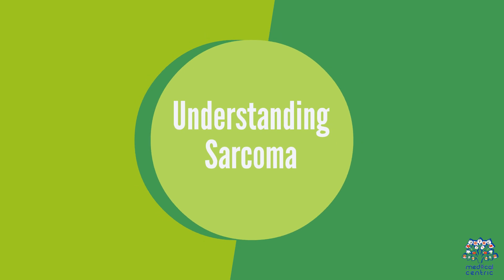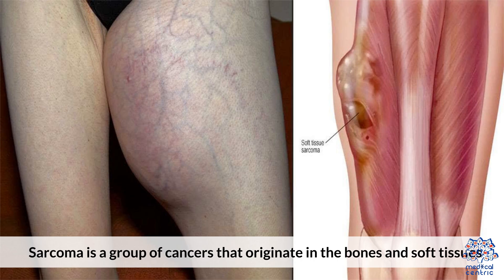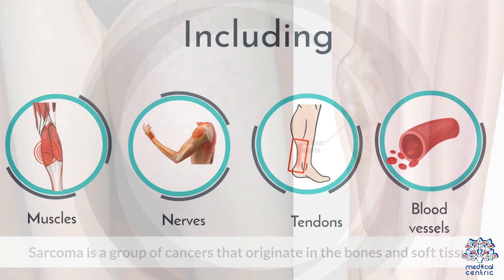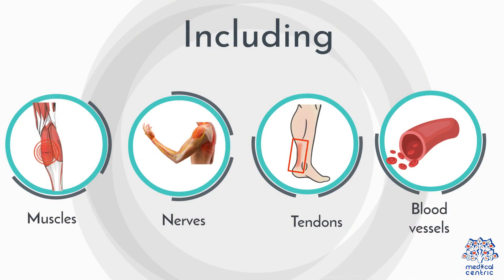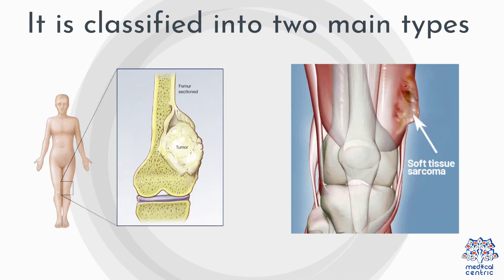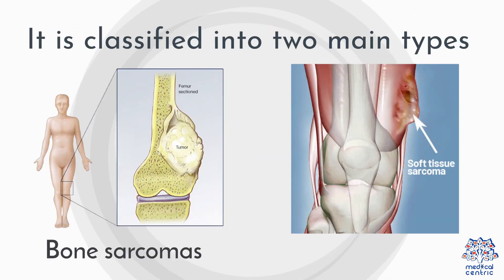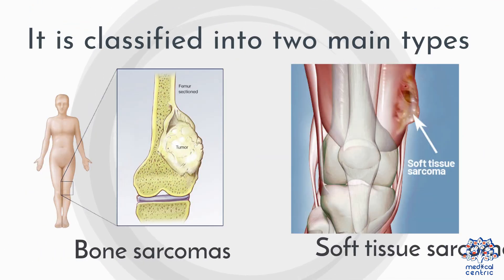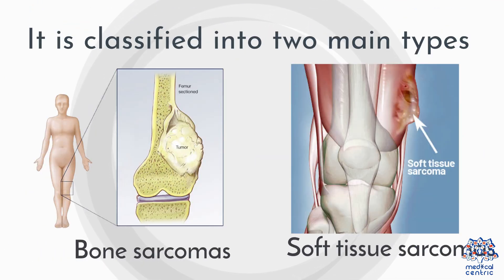Understanding Sarcoma. Sarcoma is a group of cancers that originate in the bones and soft tissues, including muscles, nerves, tendons, and blood vessels. It is classified into two main types: bone sarcomas and soft tissue sarcomas.